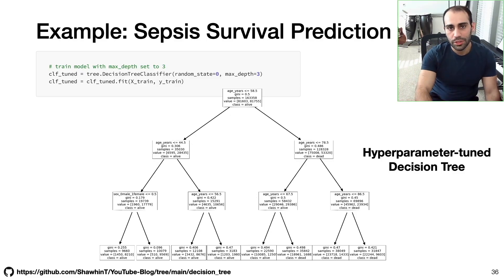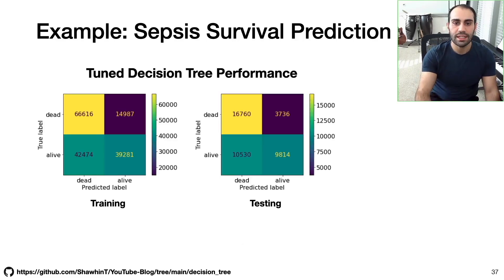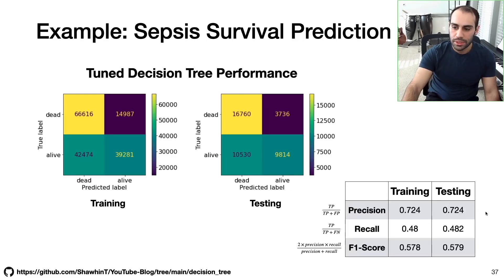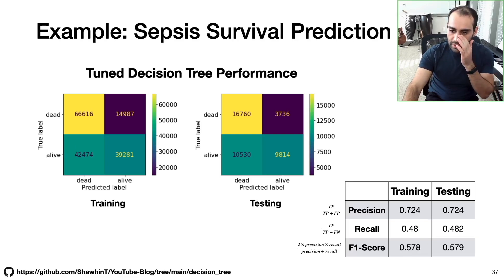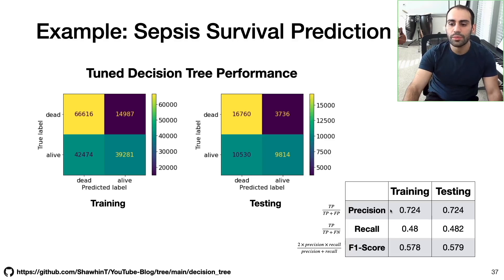Our hyperparameter-tuned decision tree seems more comprehensible, but how does it perform? Looking at the confusion matrix and three performance metrics — surprisingly, precision is actually a little better for this hyperparameter-tuned decision tree than the fully grown one. The recall and F1 scores are significantly lower than before, but in this case we may not care because precision is the metric we're really trying to optimize, since we want to weight false positives more than false negatives.